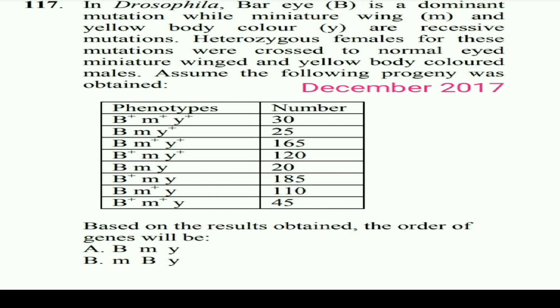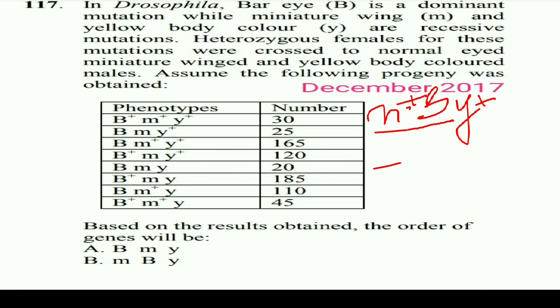Now we have to arrange our genes in the proper order. The first parent will be m+, b, y+ and the other one will have m, b+, y.